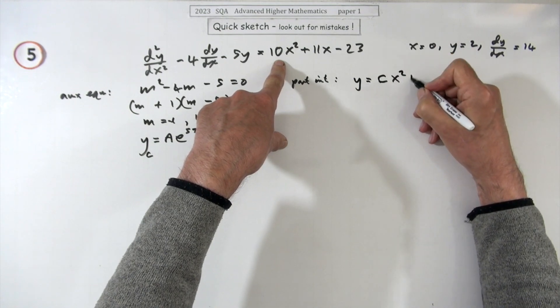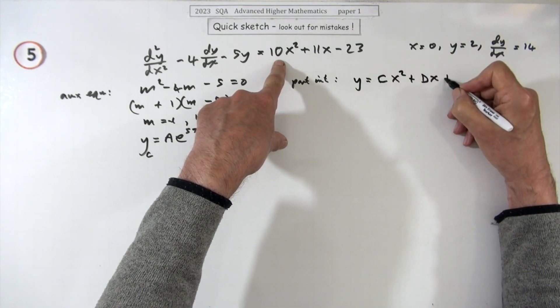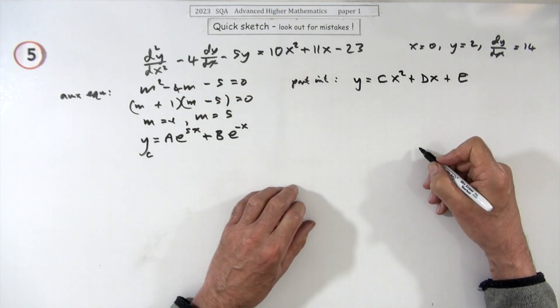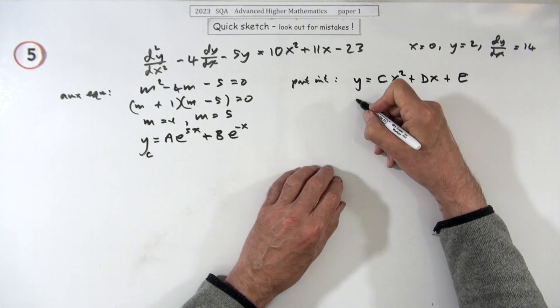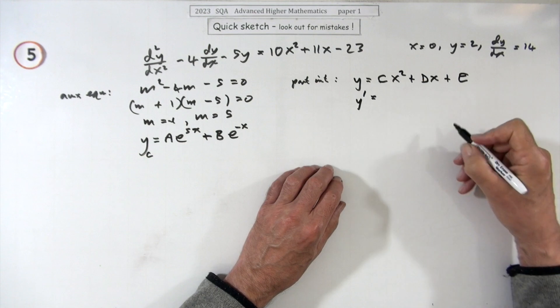I've used a and b up so I'll go for c, so cx squared plus dx plus e. Now start differentiating it, I'm just going to put dashed.